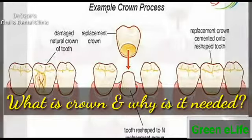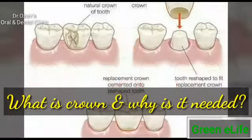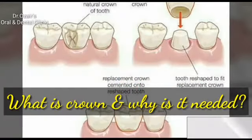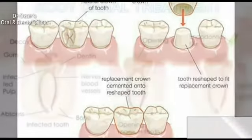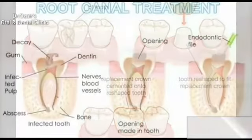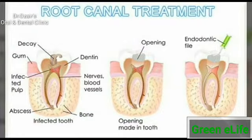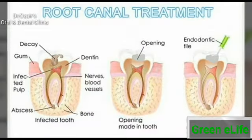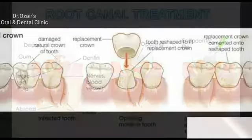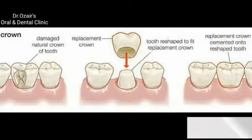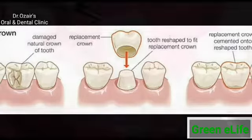A dental crown is a tooth-shaped cap that is placed over a tooth to restore its shape and size, strength, and improve its appearance. A crown, when cemented into place, fully engages the entire visible portion of the tooth that lies at and above the gum line.